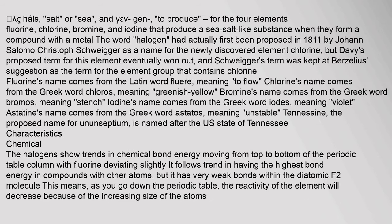Etymology: In 1842, the Swedish chemist Baron Jöns Jakob Berzelius proposed the term halogen — from the Greek hals meaning salt, and gen meaning to produce — for the four elements fluorine, chlorine, bromine, and iodine that produce a salt-like substance when they form a compound with a metal. The word halogen had first been proposed in 1811 by Johann Salomo Christoph Schweigger as a name for the newly discovered element chlorine, but Davy's proposed term eventually won out, and Schweigger's term was kept at Berzelius' suggestion as the term for the element group.